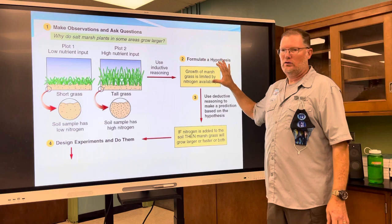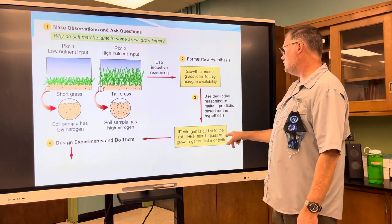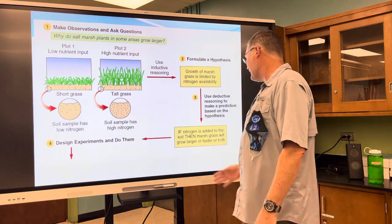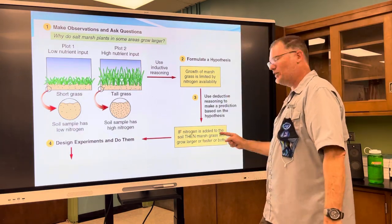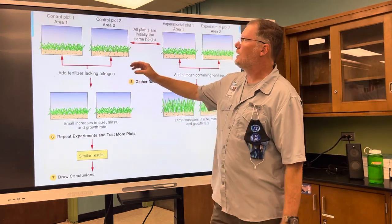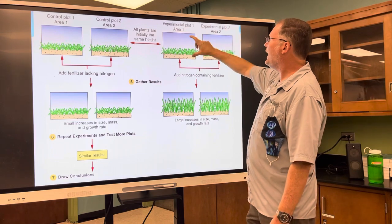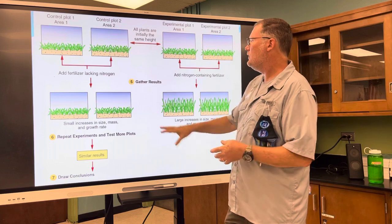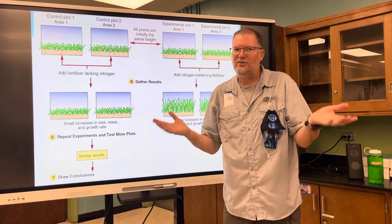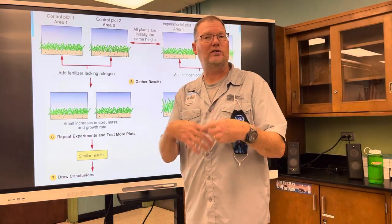Just an inductive guess is not good enough; you need to do the research first. Then your hypothesis is: if nitrogen is added to the soil, then marsh grass will grow larger or faster. You have to pick one specific outcome. You design an experiment with control plots where you do nothing and experimental plots where you add nitrogen fertilizer to the salt marsh grasses. To gather results, you measure the length of the plant with a tape measure. Then you repeat the experiments, and once you get the same results, you draw conclusions.